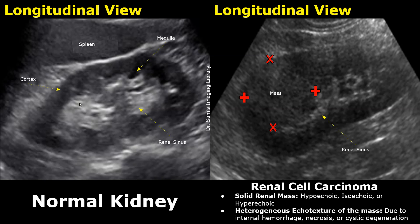The renal sinus contains fat, so it appears bright. These are the main parts of the kidney seen in this view. In the image on the right, we see a mass inside the kidney. It is a solid mass because it does not have posterior acoustic enhancement. It is also not a calcified mass because there is no posterior acoustic shadowing. The mass appears somewhat heterogeneous and isoechoic to the kidney.